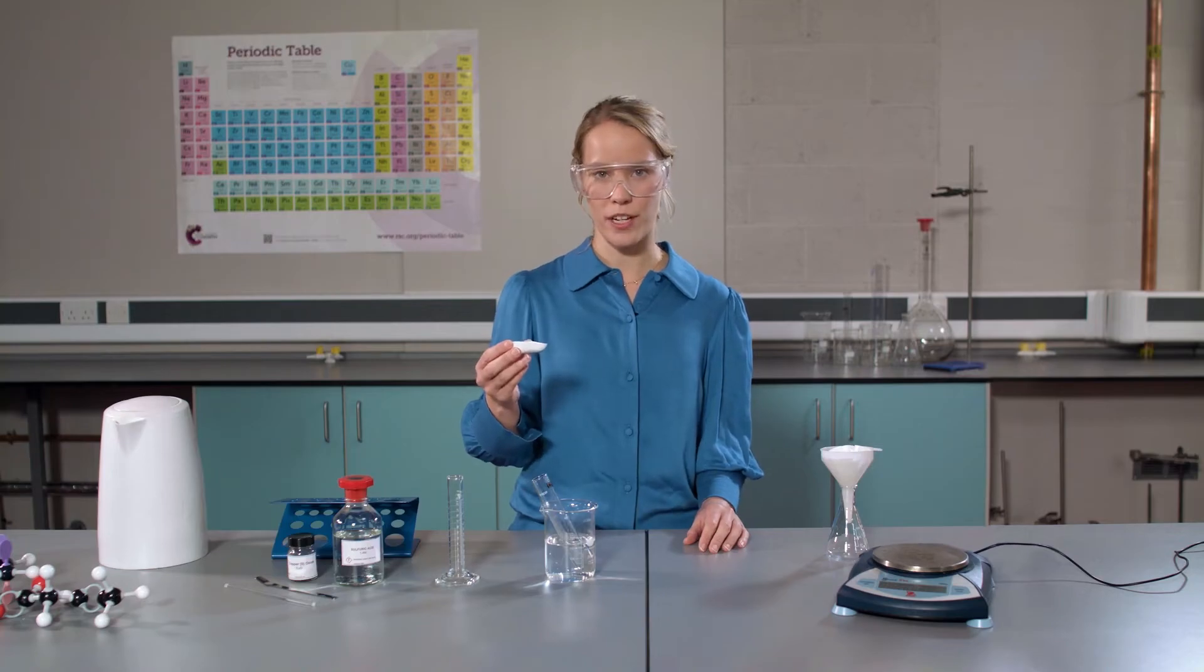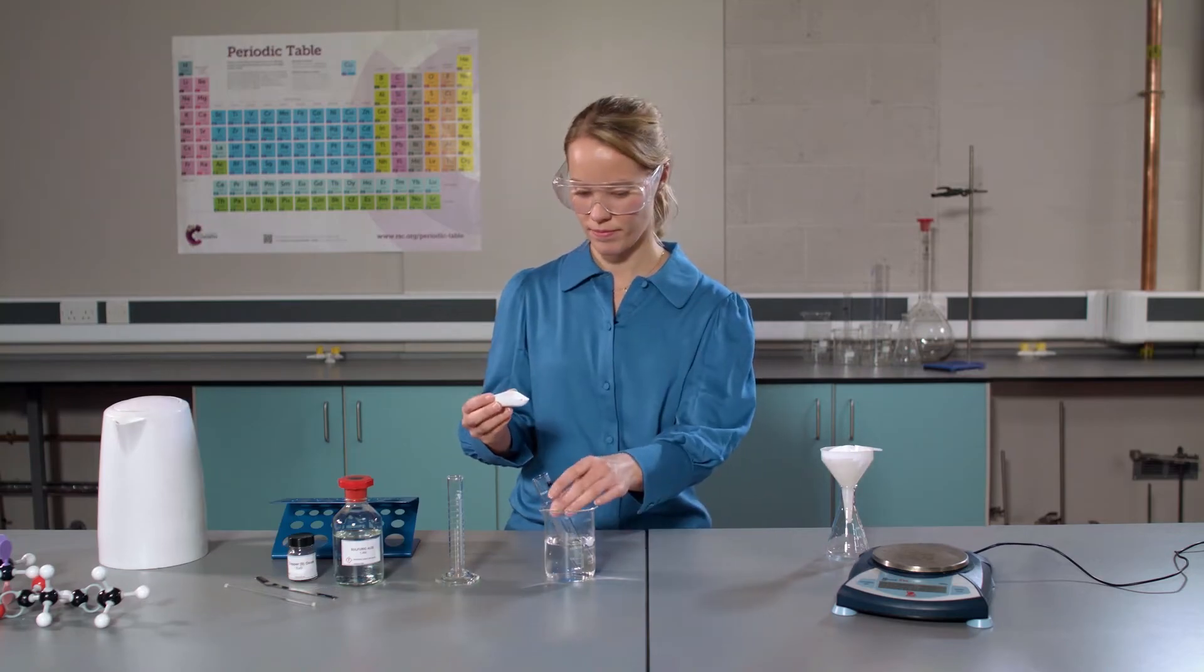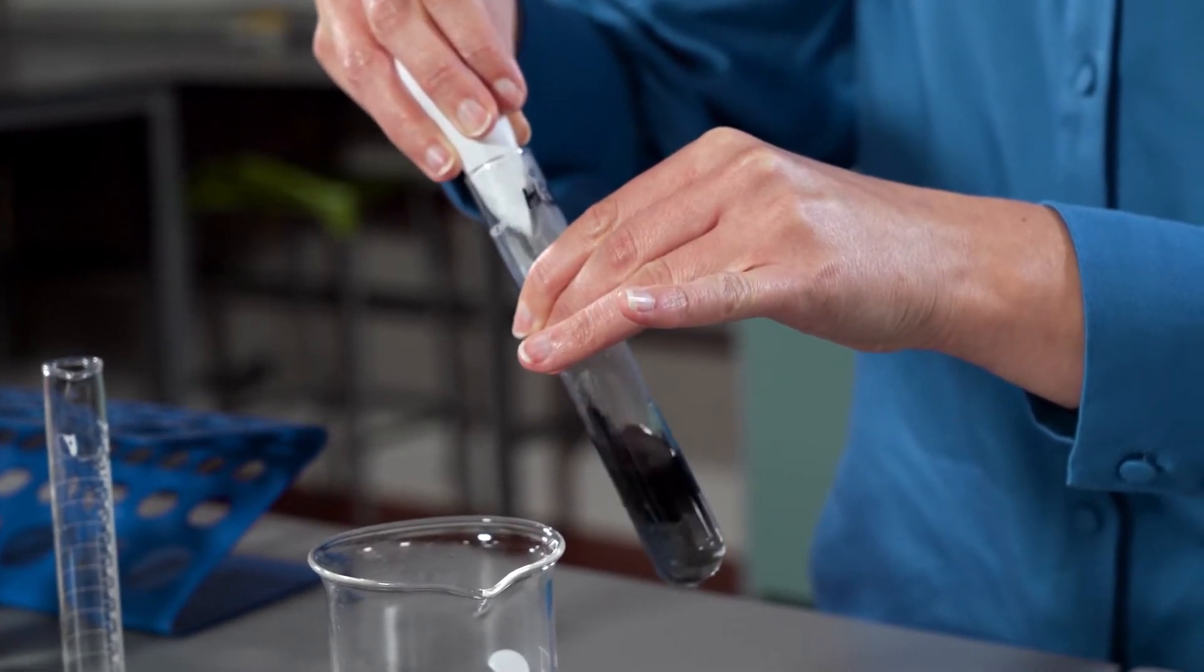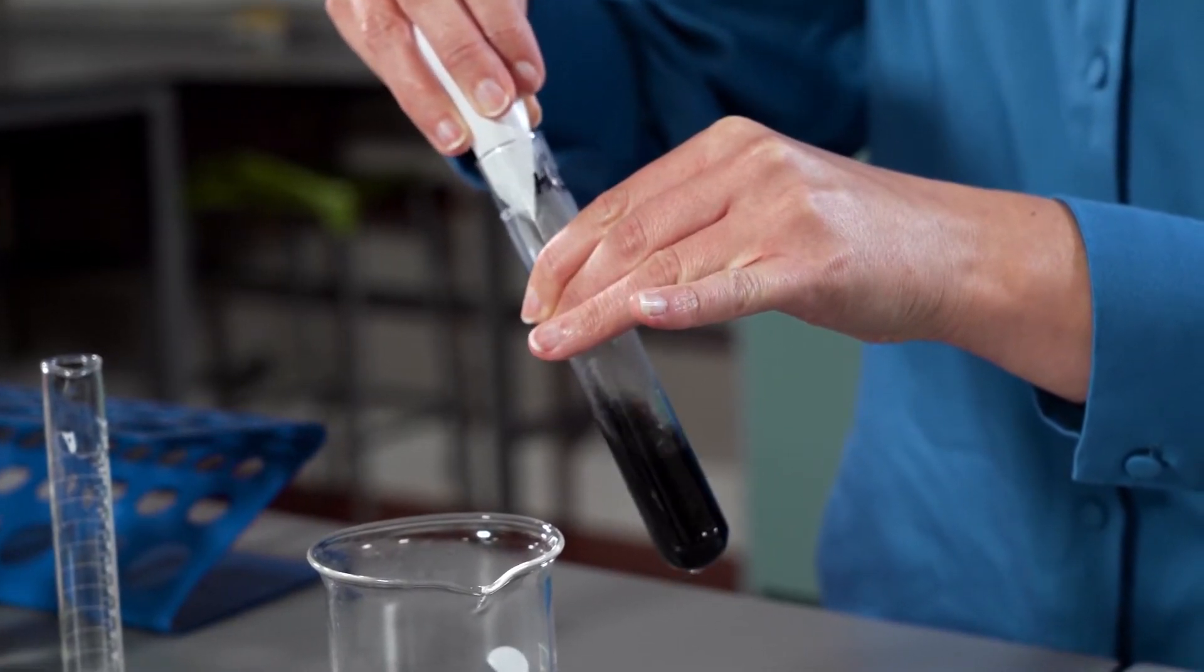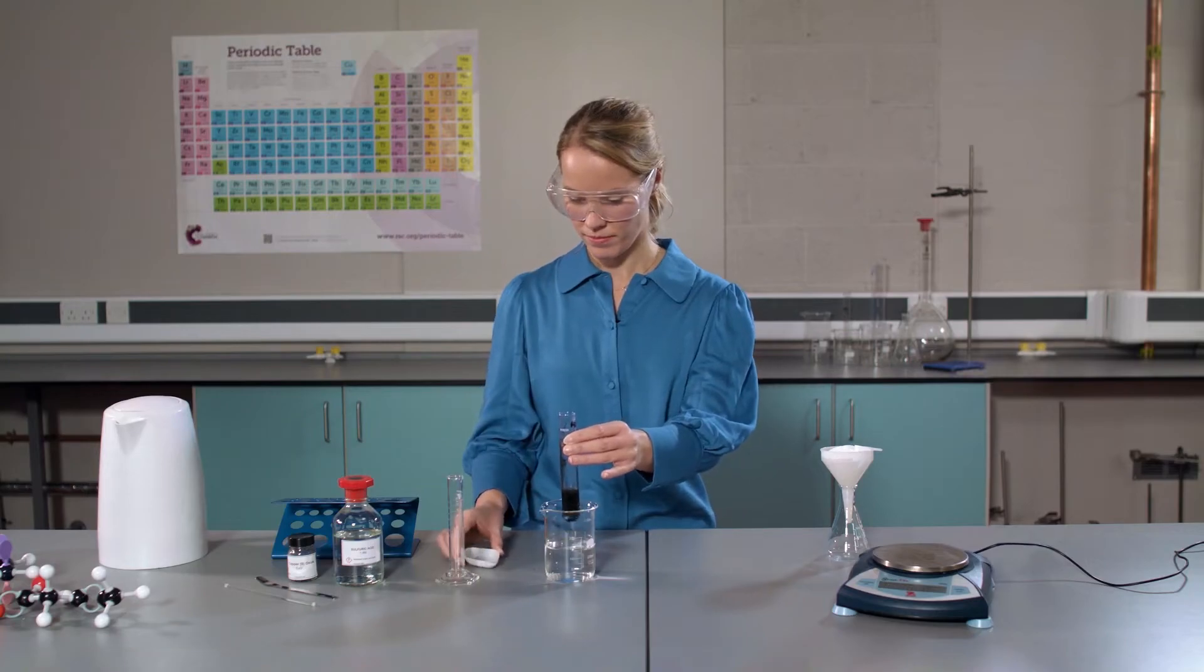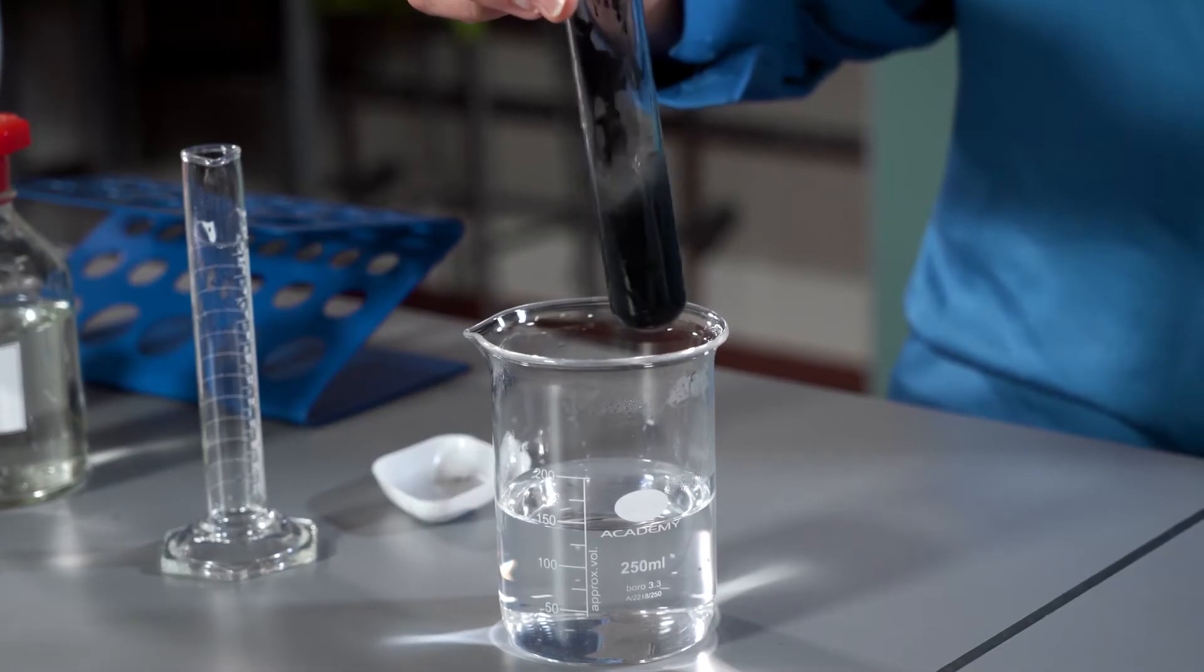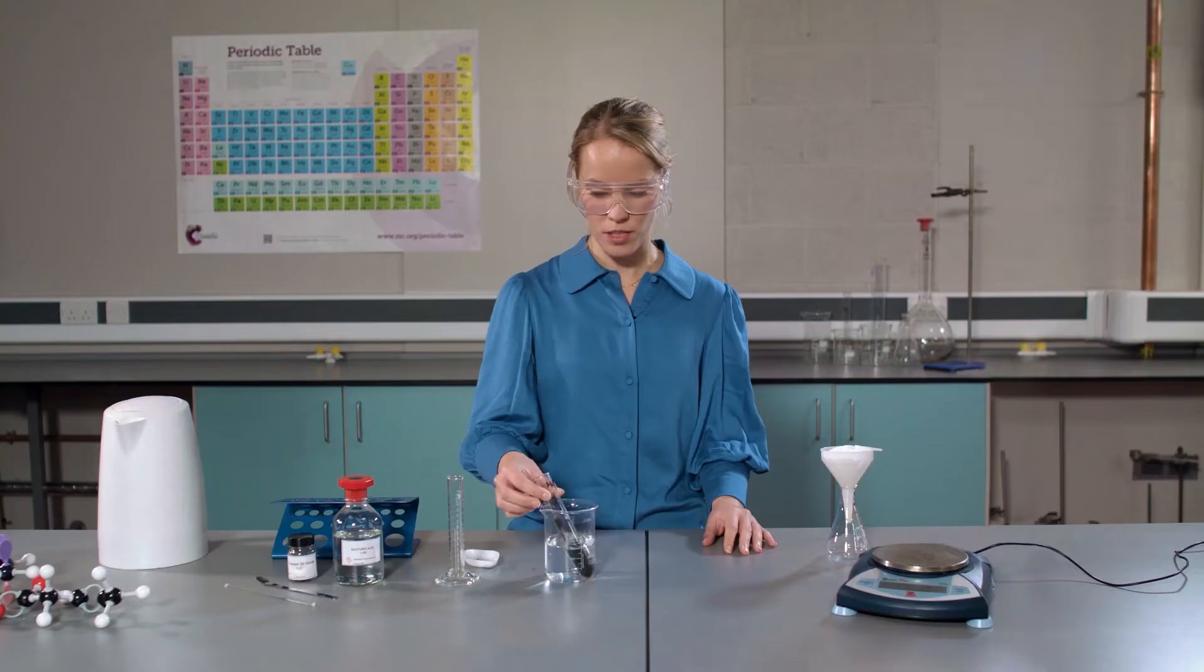Now add half of the copper oxide to the acid. Agitate gently, then place the boiling tube back in the water.